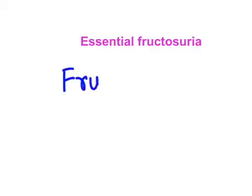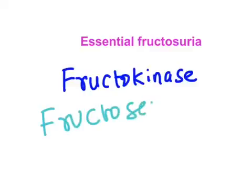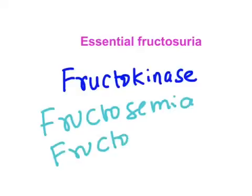Now let's move on to see our first disorder: essential fructosuria. Essential fructosuria is caused by deficiency of fructokinase, the very first enzyme in fructose metabolism. The deficiency of fructokinase leads to accumulation of fructose in the blood, since fructose cannot be metabolized and returns to circulation. This gives rise to elevated fructose in the blood — called fructosemia — and fructose appearing in urine — called fructosuria. These two are the laboratory features seen in essential fructosuria.